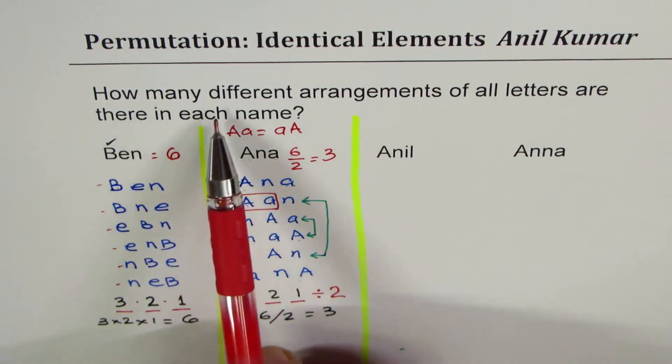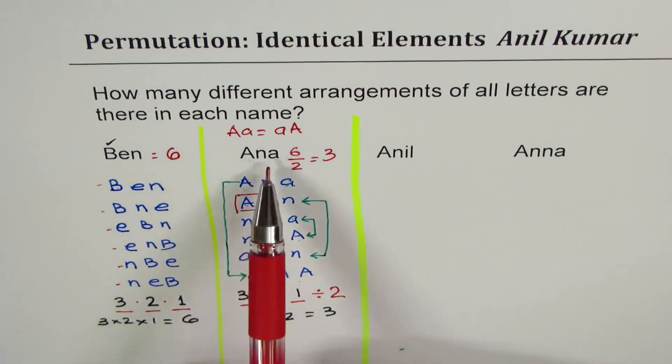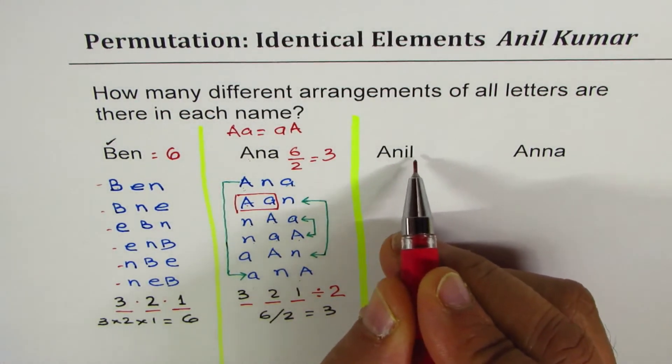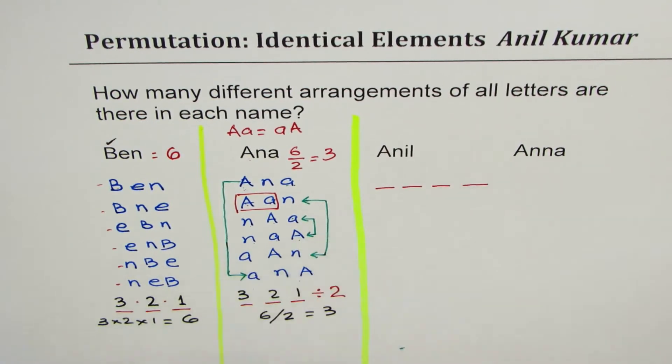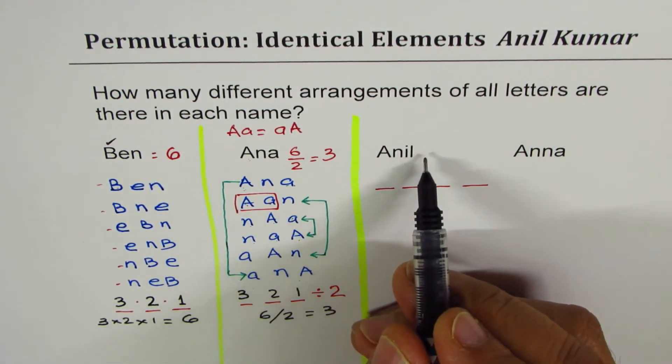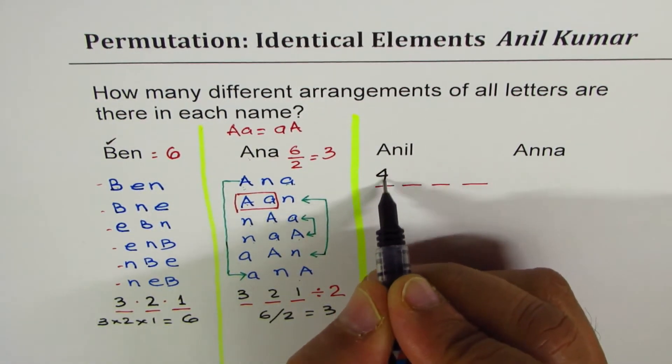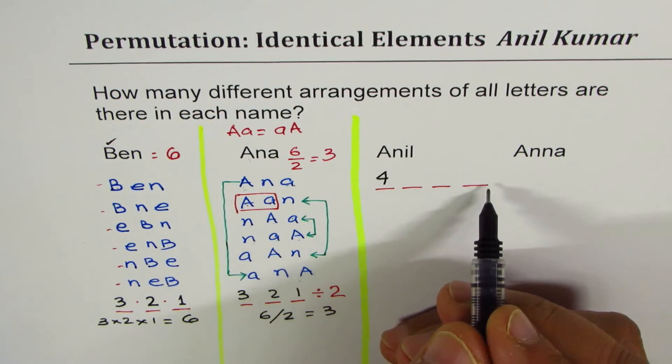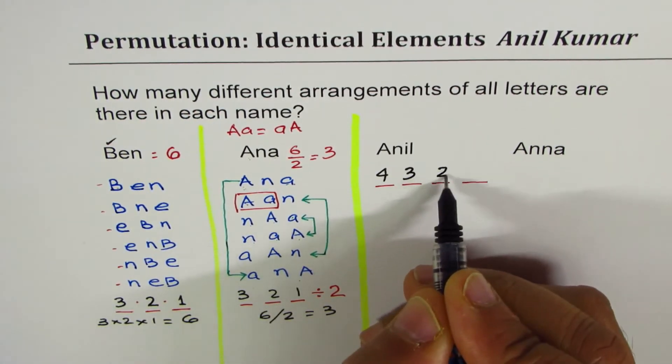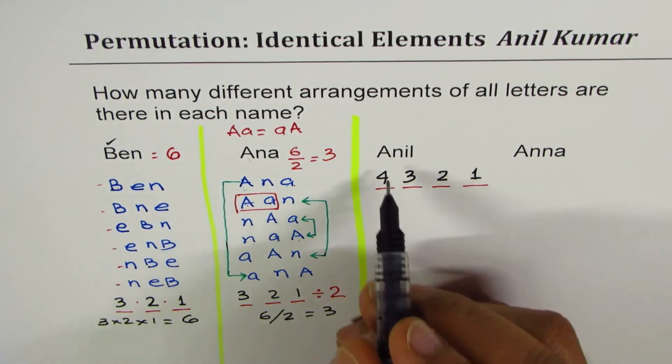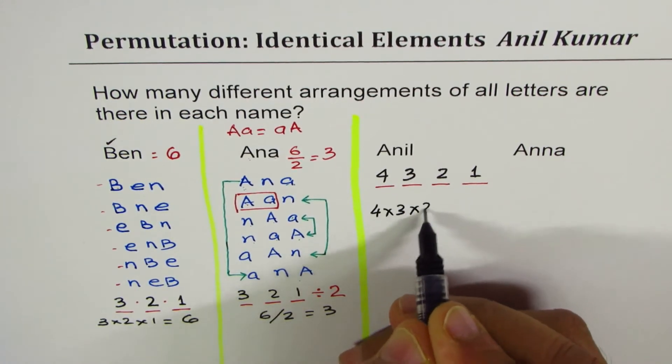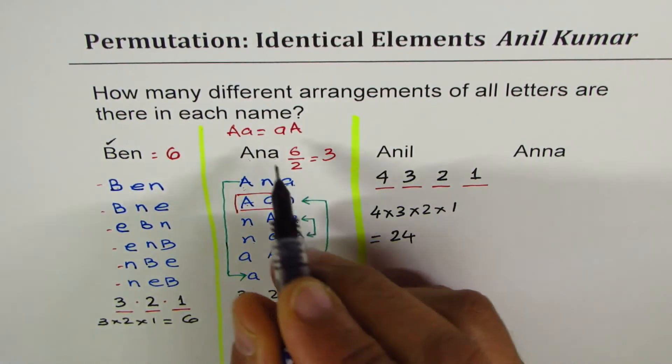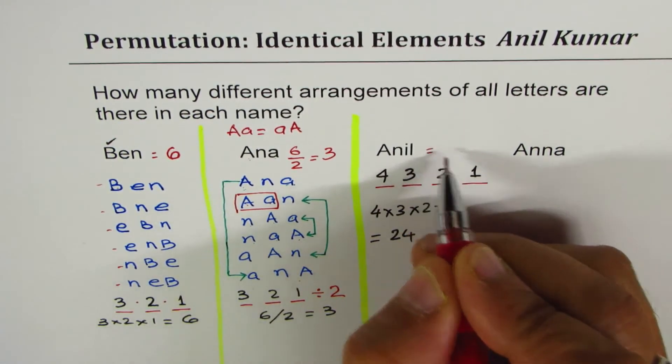Now we are again looking into the same question. How many different arrangements of all letters are there in each name? And this time the name is Anil, A-N-I-L. We have four positions. A-N-I-L. One, two, three, four. Since there are four different letters, we have choice of four in the first position. Once we take away any one of them, it could be A-N-I-L, we are left with three only. Then we are left with a choice of three. Once we take that, left with a choice of two, then just one. And therefore, total number should be four times three times two times one. And that is four times three is twelve, twelve times two is twenty-four. We get the answer for this one as twenty-four.